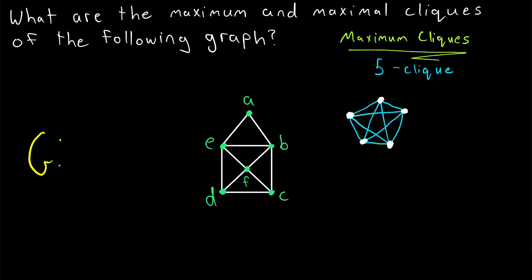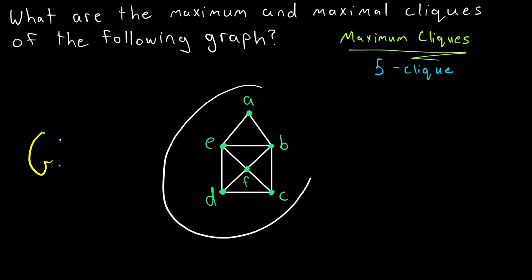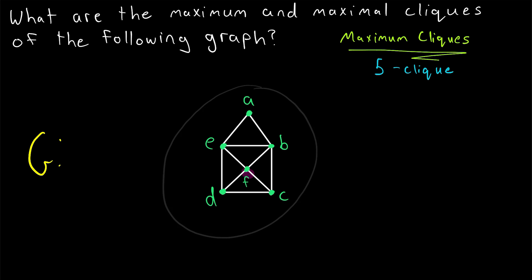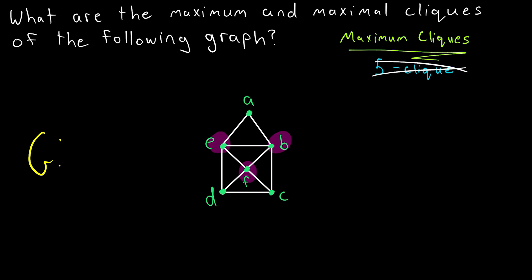Remember that this is what a five-clique would look like — it's a complete subgraph that has five vertices. Every vertex in a five-clique, by definition, needs to be adjacent to the other four vertices. Thus, in order for this graph to have a five-clique, it would need to have at least five vertices that have a degree of at least four. But there are only three vertices in this graph that have a degree of four or greater, so we can immediately see that it's not possible for this graph to contain a five-clique.